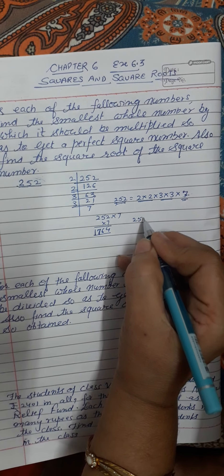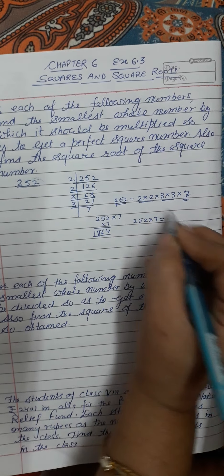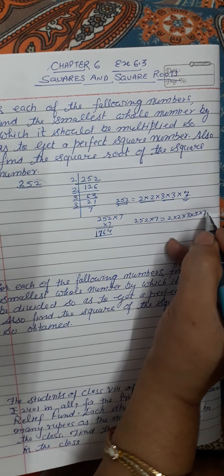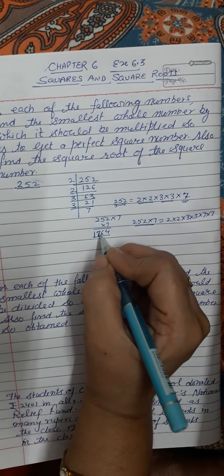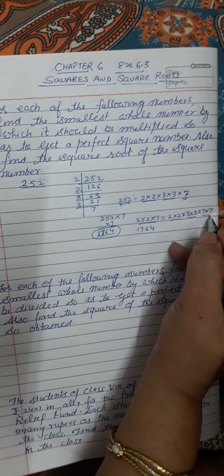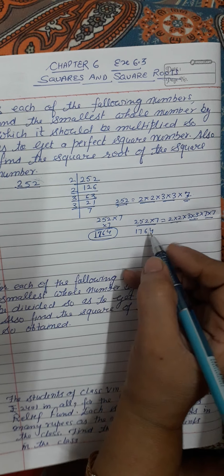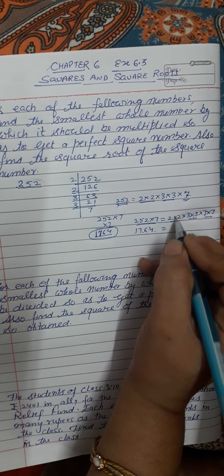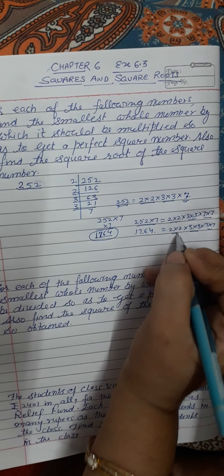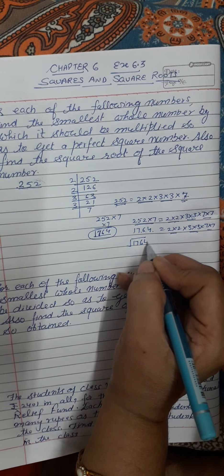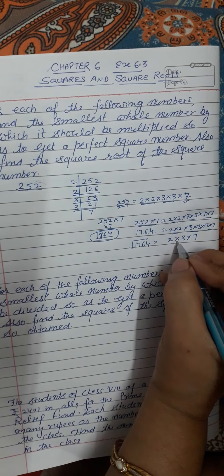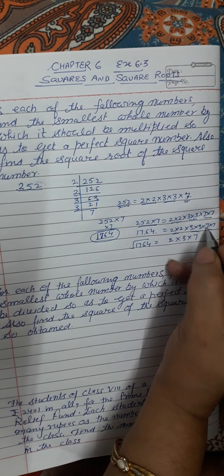We have multiplied by 7. The number is 1764. The square root is: we will take one number from each of these pairs. So 1764 equals 2 × 2 × 3 × 3 × 7 × 7. Now square root of 1764 is 2 × 3 × 7. We take one number from each pair, and now you have to simply multiply. This will give you 42.